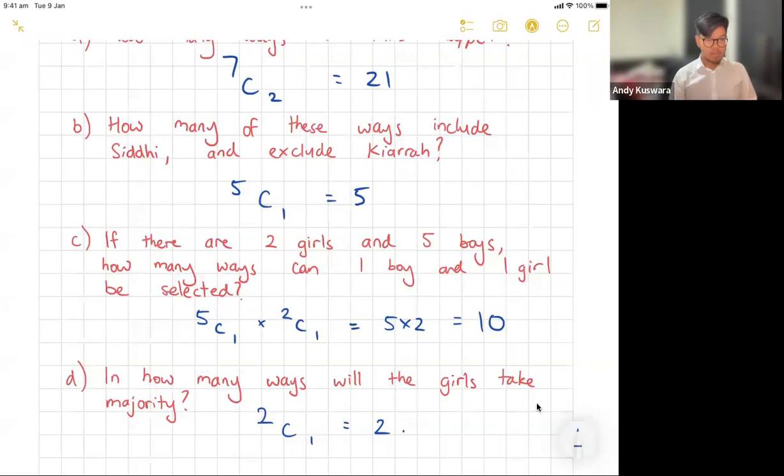How many ways will the girls take majority? Well, there's only really one way, isn't there? Oh, it's not 2 choose 1, it's 2 choose 2. That's why it's going to be 1. Because there's two girls and I need to choose both of them. You put that in your calculator, 2 choose 2, there's only one way that I can choose two from two. That'll make more sense. All right, thanks guys, I'll see you in another video. Catch you later, bye.